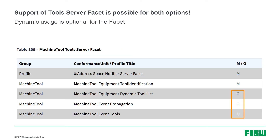One last aspect about dynamic and static usage is the tools server facet. The important takeaway is that support of the tools server facet is possible for both options. The conformance units — machine tool equipment dynamic tool list, event propagation, and event tools — are all optional in this facet. However, all three shall be implemented if the dynamic tool list is implemented, because the events conveyed by the event propagation and event tools conformance units are used to inform a client that the dynamic tool list has changed.